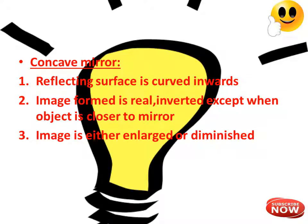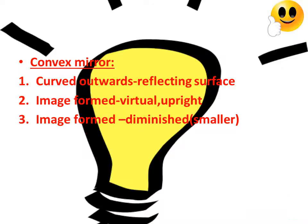Now, I have listed points you can use for the difference between concave, convex, and plane mirrors. In a concave mirror, the reflecting surface is curved inwards and the image formed is real and inverted, except when the object is closer to the mirror — in that case the image is virtual. The image is either enlarged or diminished. In a convex mirror, the reflecting surface curves outwards, and the image formed is virtual, upright, and diminished — meaning smaller.